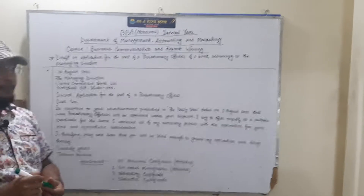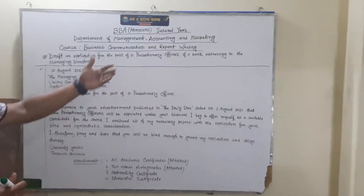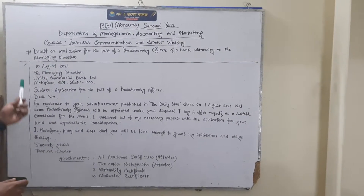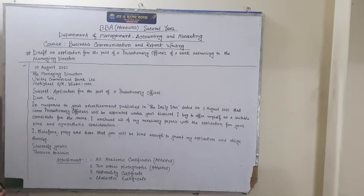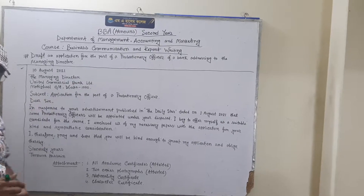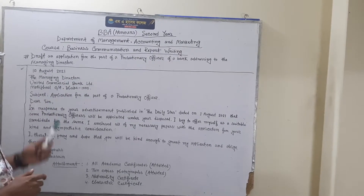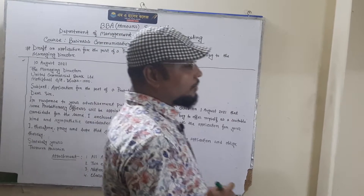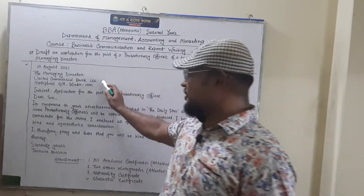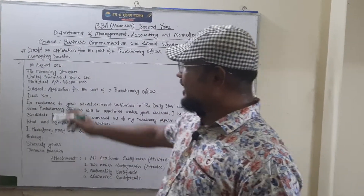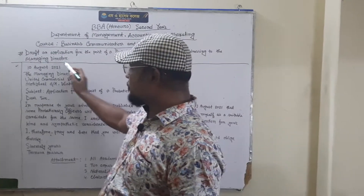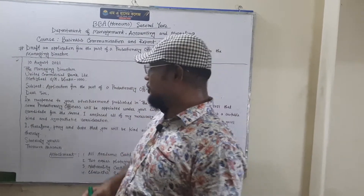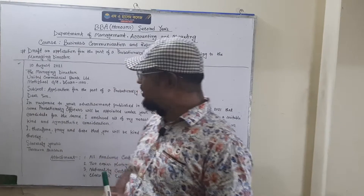This is for a bank post, so we should write 'Managing Director.' There is an imaginary bank: United Commercial Bank Limited, Motijheel Commercial Area, Dhaka 1000. This is the address. So there is the date, and this is the addressing to the Managing Director, United Commercial Bank Limited.